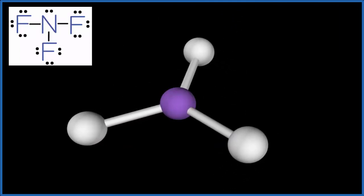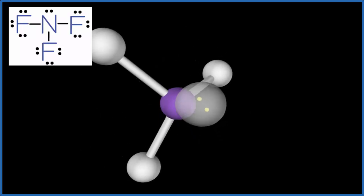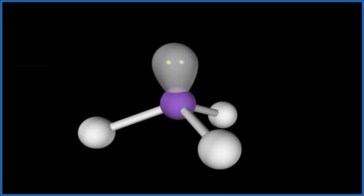But we still have that lone pair, so if we put this lone pair on, it'll actually force them down, push them down. So now the fluorines are on the bottom and they're more electronegative.